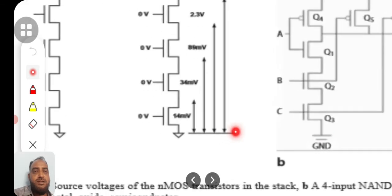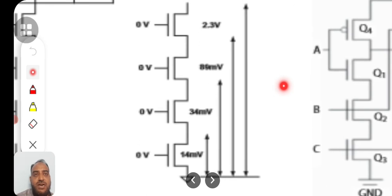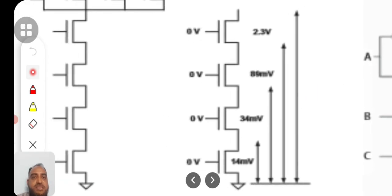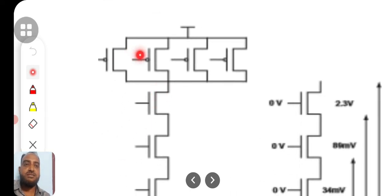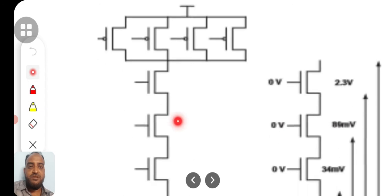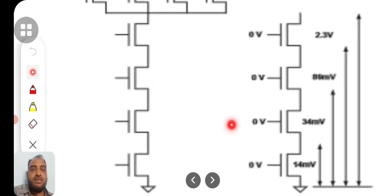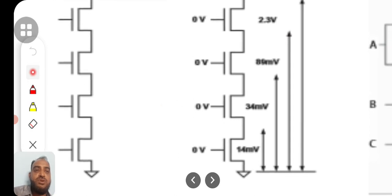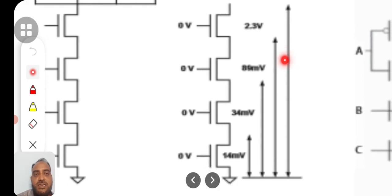Consider this example: 4 transistors are connected in series in the pull-down network, and 4 transistors are connected in parallel in the pull-up network. Consider the case when the input is 0, 0, 0, 0. In that condition, all 4 transistors in series in the pull-down network are turned off.